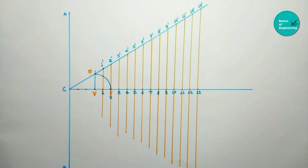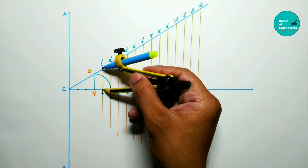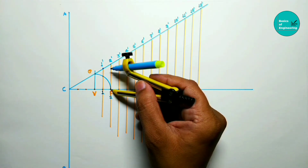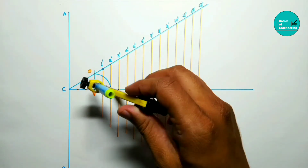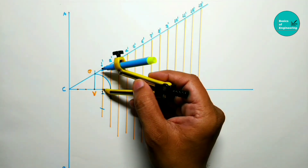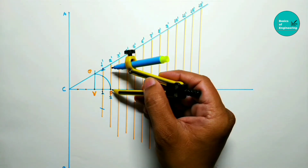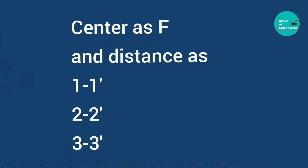Now take the compass. We are going to mark the arcs — the ellipse passes through these points. Take the distance 1 to 1 dash, with F as the center, and mark arcs on that respective line — one on the upside and one on the downside. Then take the distance 2 to 2 dash with F as center, marking arcs up and down. Continue with 3 to 3 dash, 4 to 4 dash, and so on.